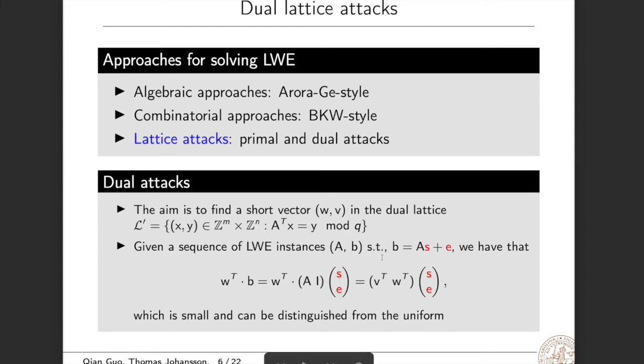Because dual attacks are the main target of this paper, we introduce them further here. So the aim of dual attacks is to find a short vector v in this dual lattice. Then, given a sequence of LWE instances, we compute the inner product of v and b, then we get this term. We see that this is small. Here, small means that the standard deviation is small because s and e are sampled from sparse distributions and v is short. So this distribution can be distinguished from the uniform distribution.